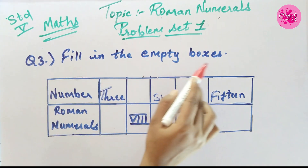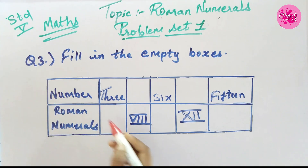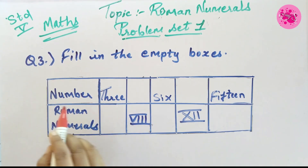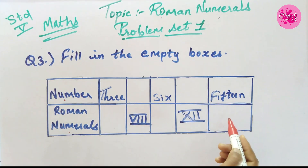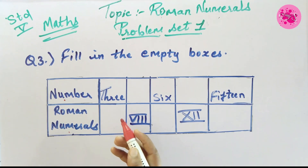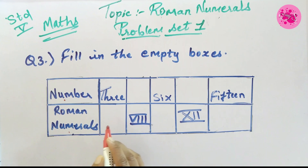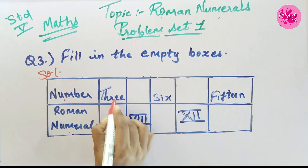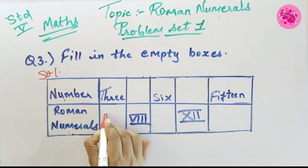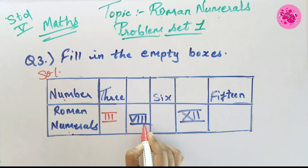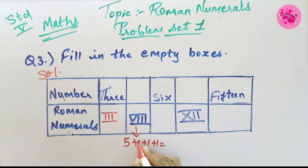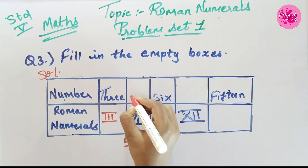Question number 3: Fill in the empty boxes. Here you can see a table with two columns — one for international numerals and one for Roman numerals. We have to fill the empty boxes with either Roman numerals or international numbers. Solution: The first number is 3, so we write the Roman numeral III. In the second column, the Roman numeral VIII (V and III) is given, meaning 5 plus 3 equals 8, so we write 8.